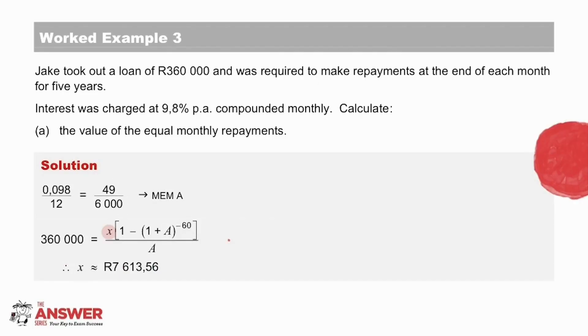So here to solve for X in our present value annuity formula, having first put the monthly interest rate in the calculator memory, 360,000 rand is the present value, and monthly payments for 5 years is 60 payments. So we see here the equal monthly repayments will be 7,613 rand and 56 cents.